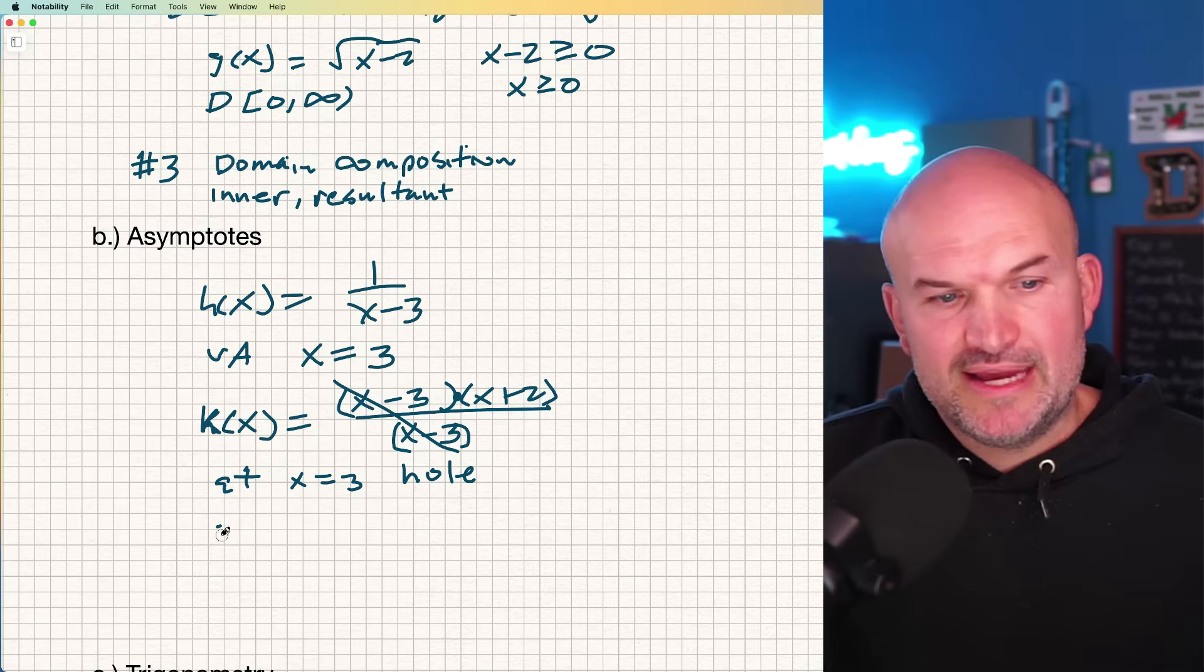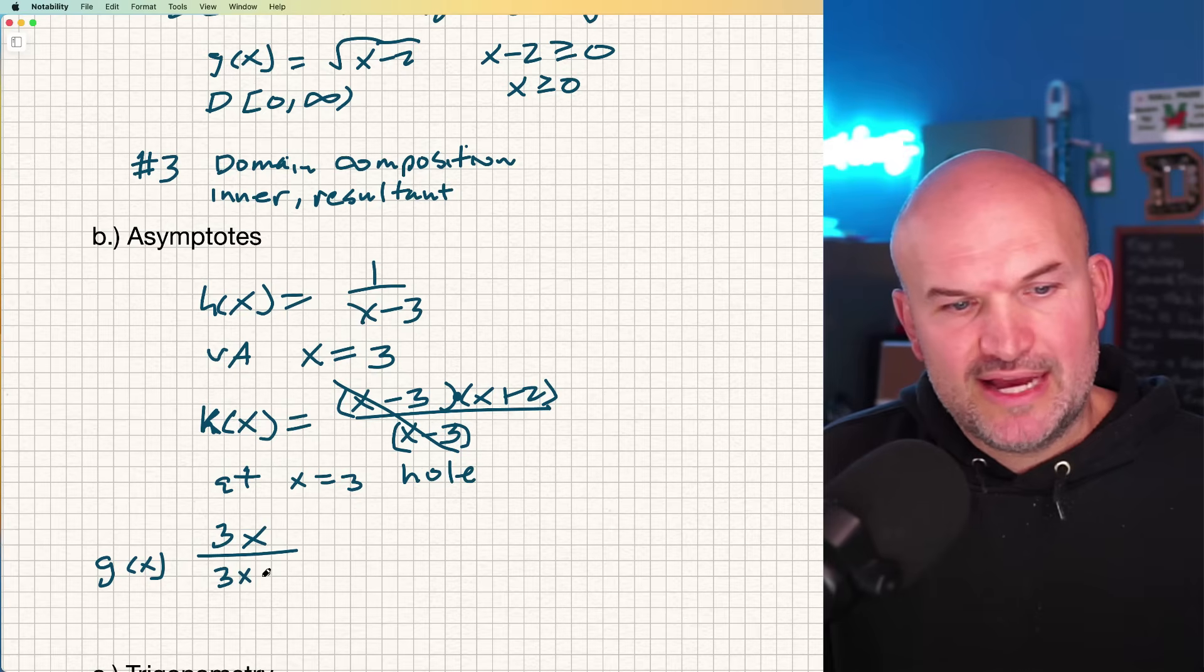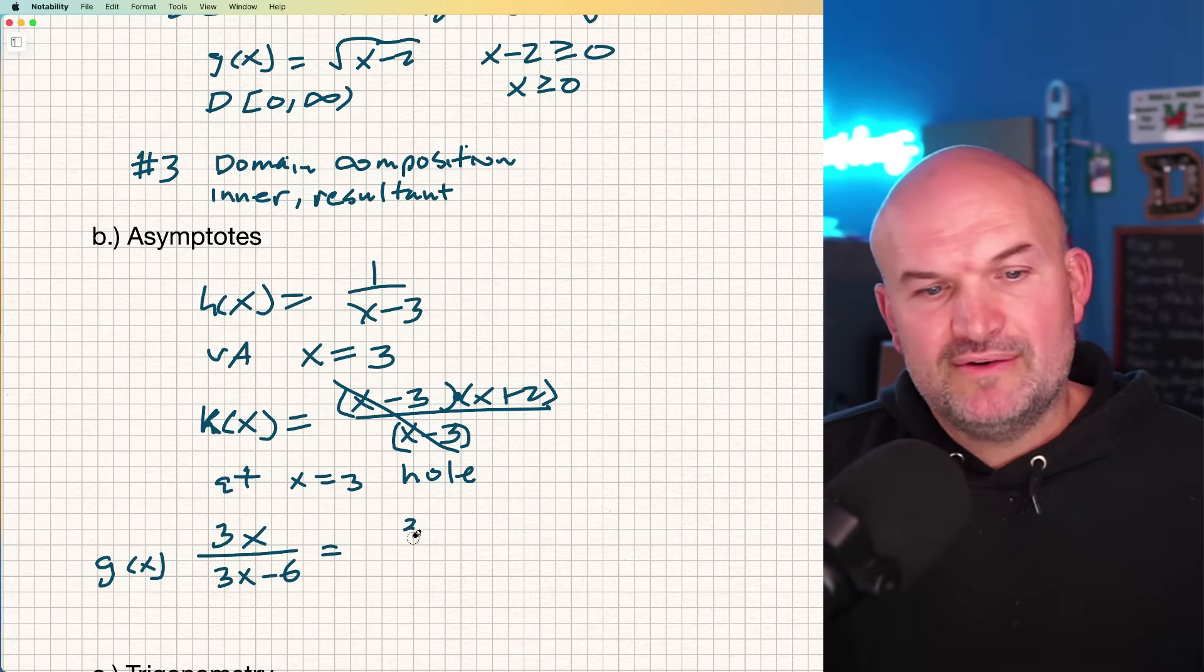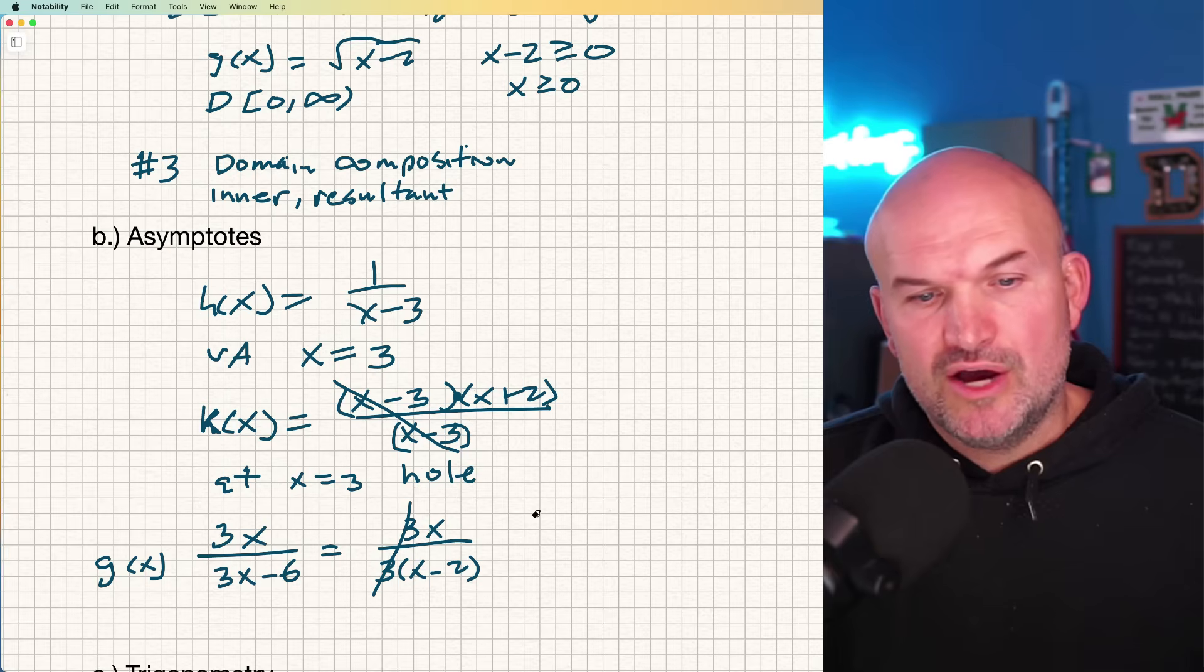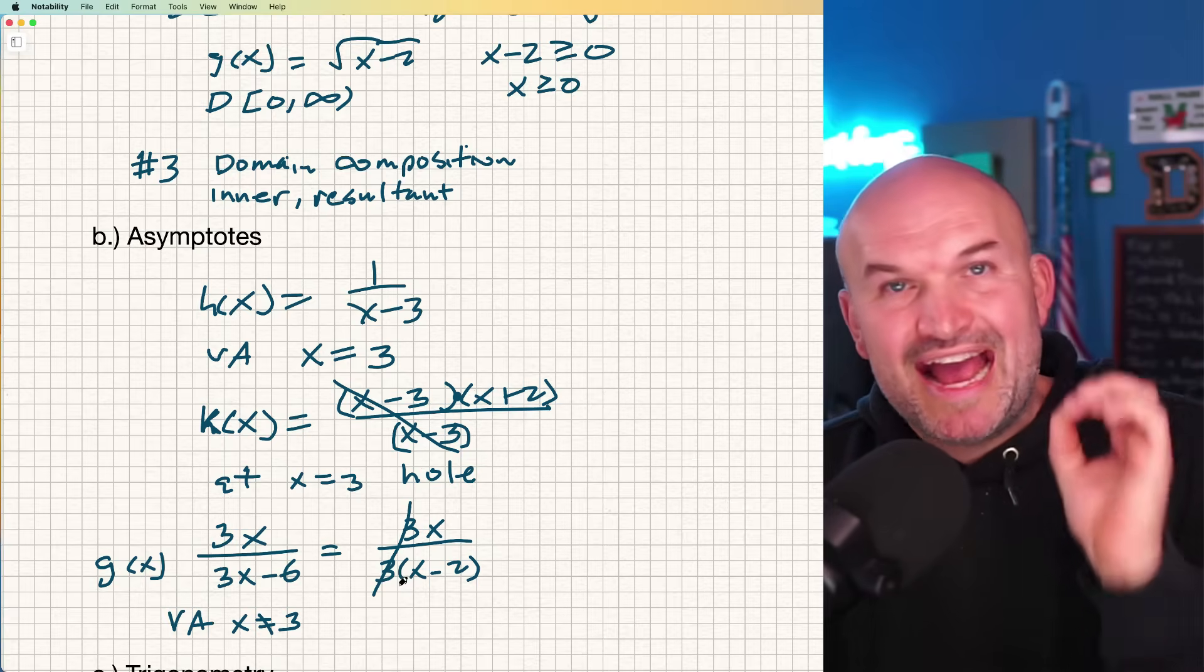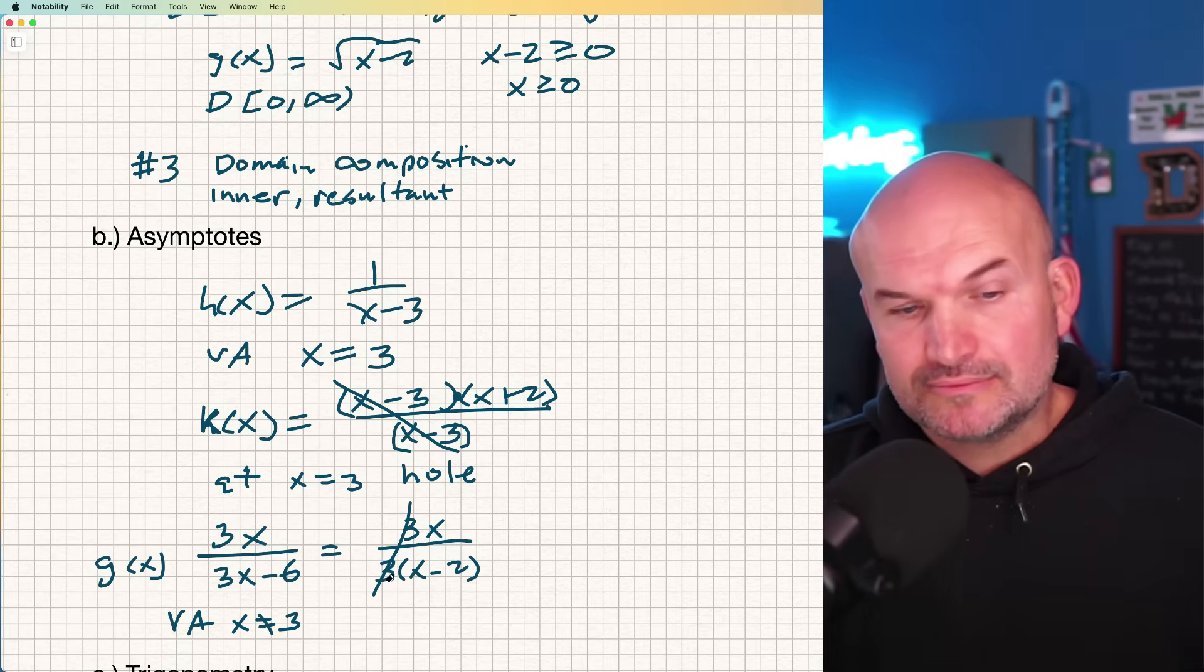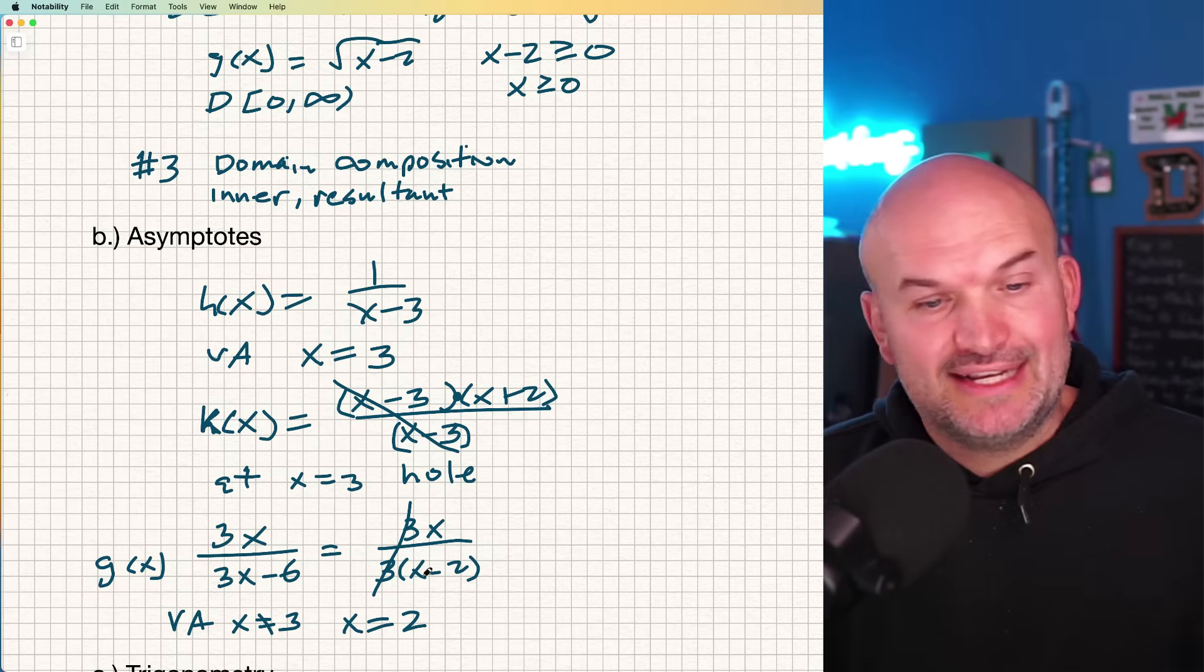The other big mistake that I see students make is if they have another function, let's say g(x) equals 3x divided by 3x minus six. We always want to factor it. We want to rewrite terms as a factor. Therefore, I rewrite this as 3x divided by three times (x-2). And then students say, oh, these divide out, so my vertical asymptote is at x equals three. No, ladies and gentlemen. These are what we call scalars. For it to be a vertical asymptote, it has to be a discontinuity. That means it has to make your denominator equal to zero. Three does not make my denominator equal to zero. The only value that makes my denominator zero is x equals two, and it cannot be removed, so it's not a hole. It's a vertical asymptote.